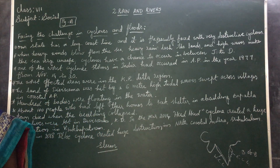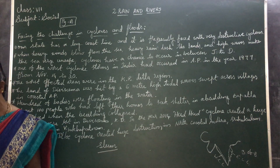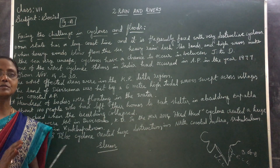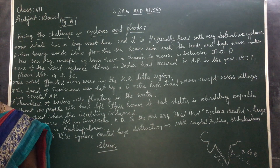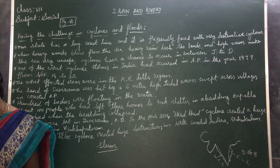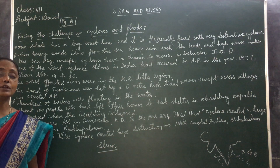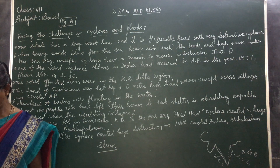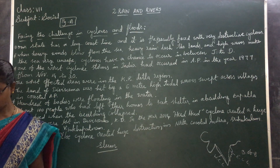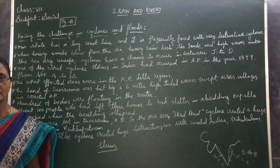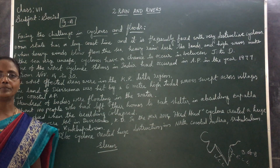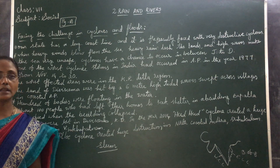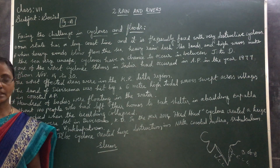When floods and cyclones occur, flood water automatically mixes with the drinking water, which gets polluted and becomes unsafe for human beings. People may contract several diseases like cholera, dysentery, typhoid, and jaundice whenever they drink that dirty water.